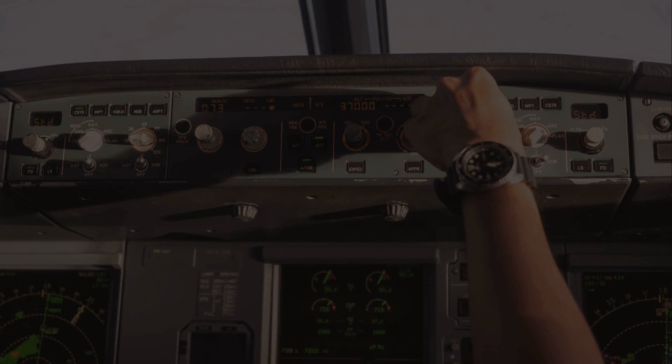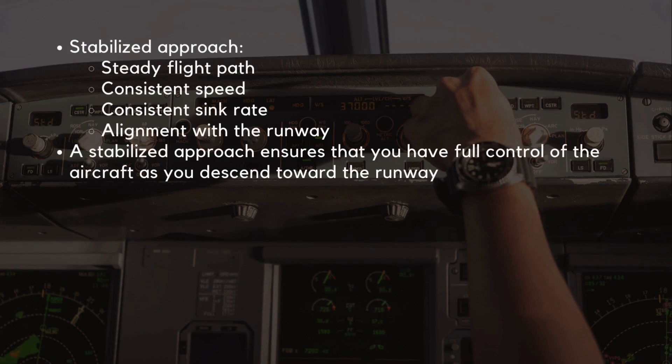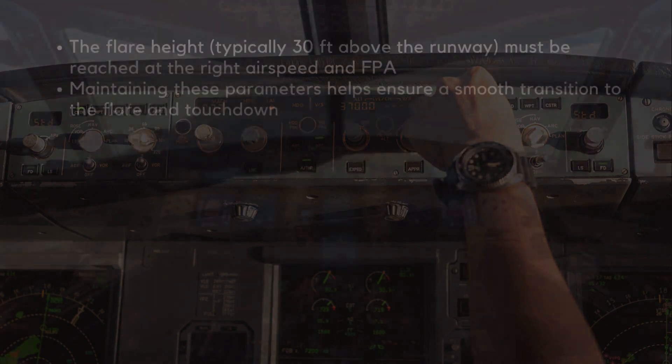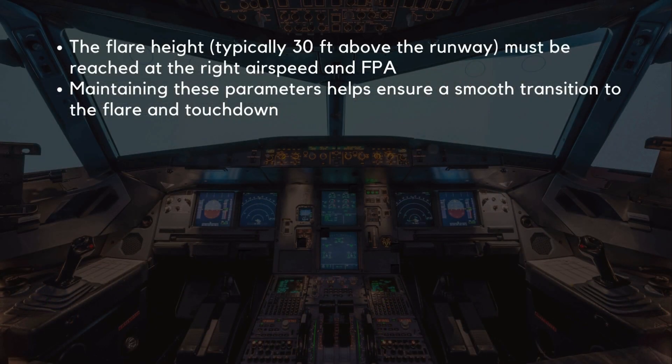The cornerstone of a successful A320 landing is a stabilized approach. This means the aircraft should be on a steady flight path with consistent speed, sink rate, and alignment with the runway. A stabilized approach ensures full control of the aircraft as you descend. The flare height, typically about 30 feet above the runway, must be reached at the right airspeed and flight path angle.